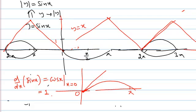So y equal to x is tangent to the sine graph at the origin. After that, the sine graph goes like this. One point of intersection is here, another point of intersection is here — that's two points — and a third point of intersection is here. Overall, we have three points of intersection between the two graphs.